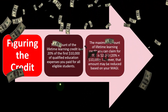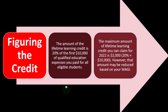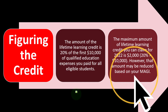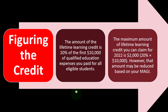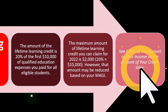The maximum Lifetime Learning Credit you can claim for 2022 is $2,000 — that's 20% of $10,000. However, that amount may be reduced based on your MAGI, the modified adjusted gross income. This phase-out is generally based not on gross income but on adjusted gross income with a slight modification, usually due to foreign income situations.